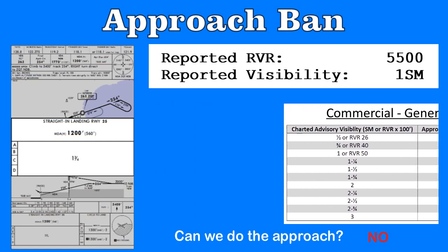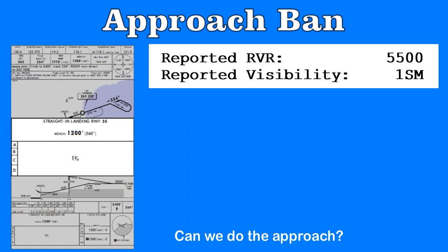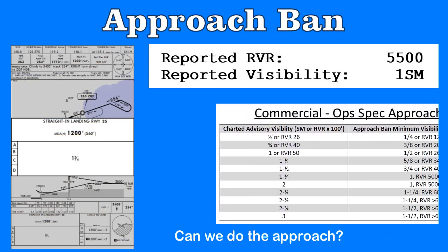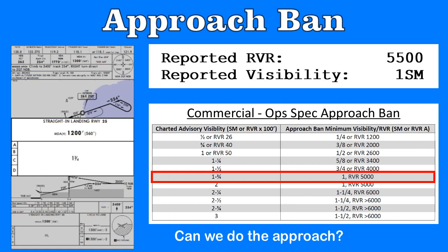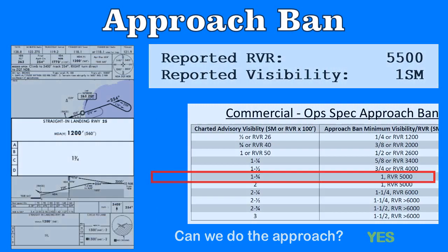If we had the special OPSPEC approach ban, then could we do the approach? A quick look at this table shows us that yes, in fact, we could. For one and three-quarters, we must have at least one mile and an RVR greater than 5000. We have RVR 5500 and one mile reported, so we can do the approach. Remember that RVR takes precedence when it is available, so the RVR 5500 in this case exceeds the requirement of RVR 5000.